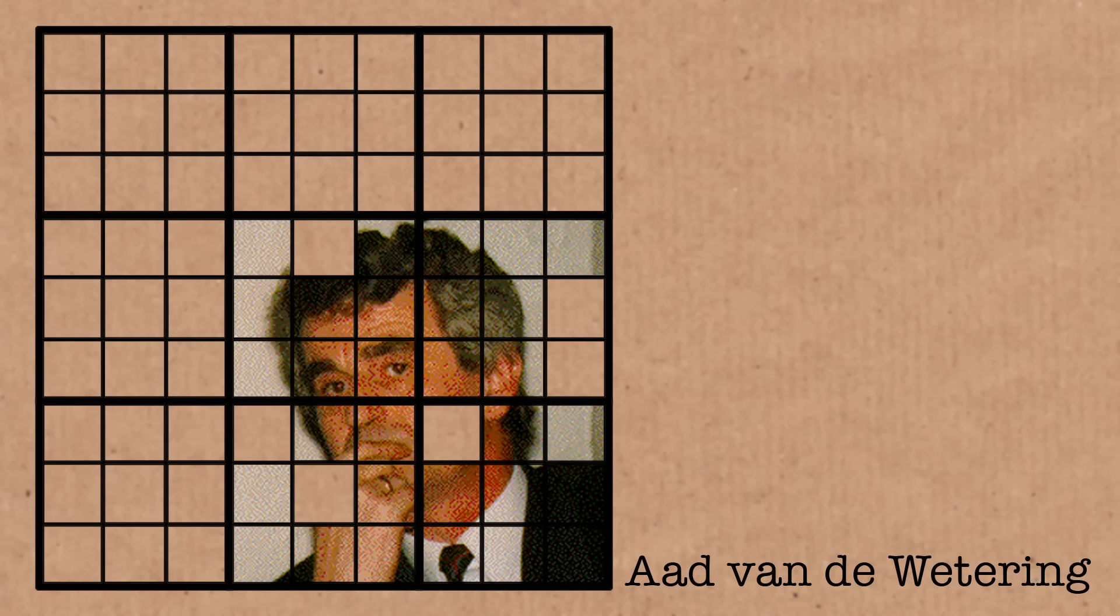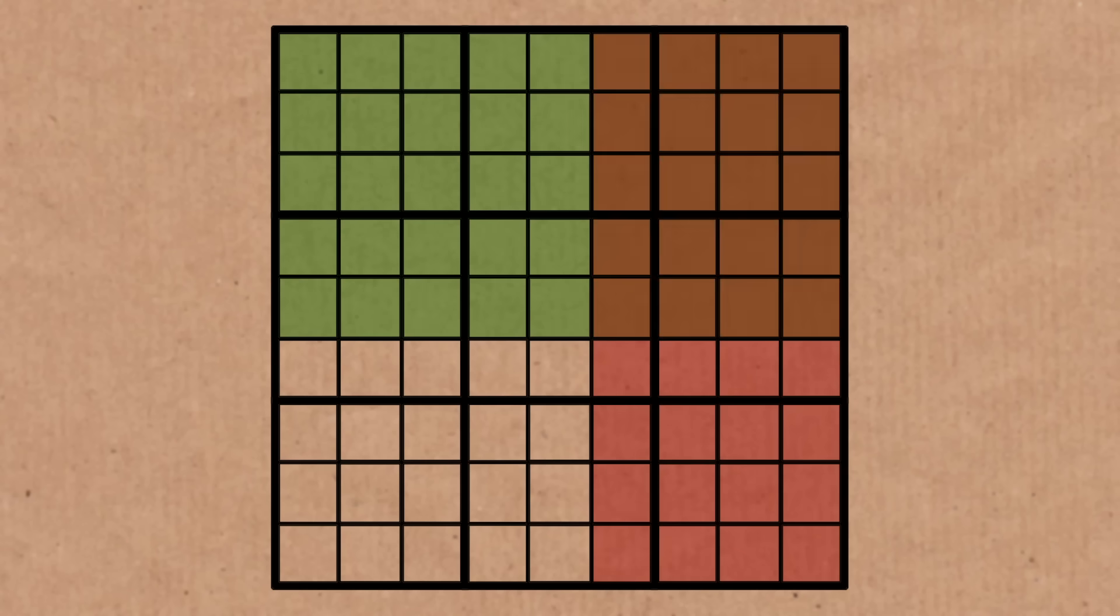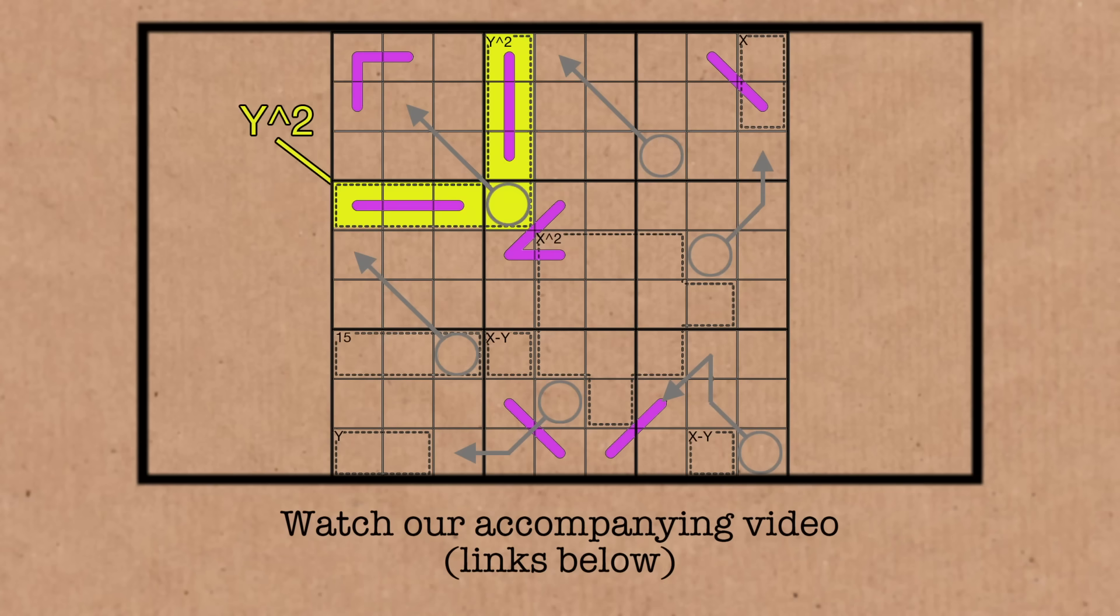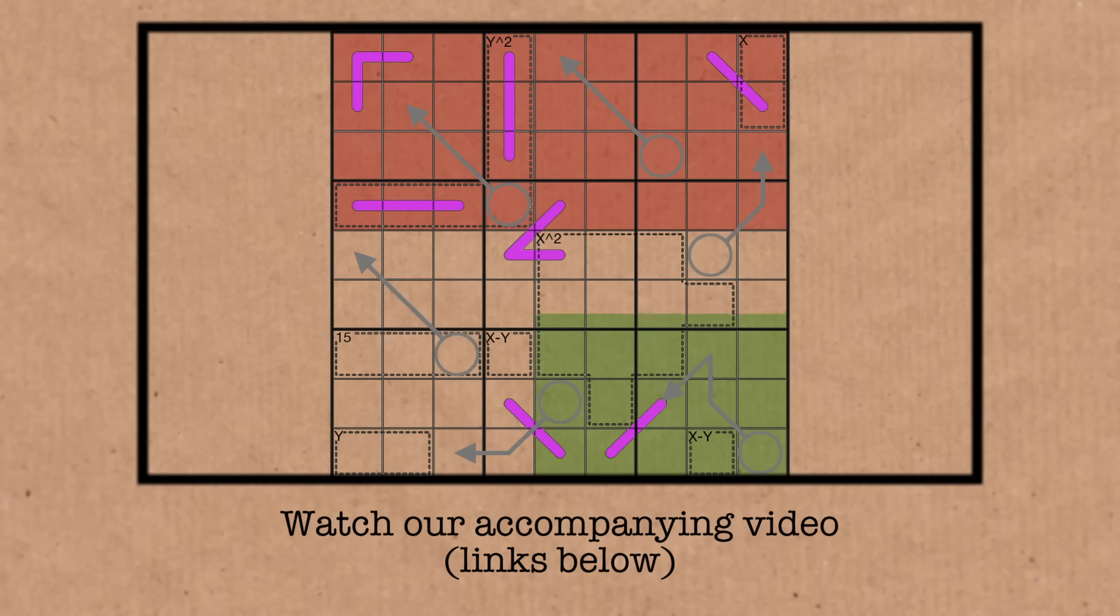He found that there's a square in the top left of a Sudoku and a square in the bottom right of the Sudoku that have a relationship using exactly this trick. And we've even seen puzzles now where you can use this feature to create the difference of squares equation in Sudoku form. It sounds completely crazy, but you can see it on the screen here.